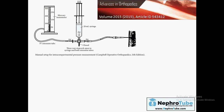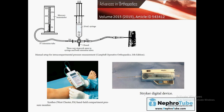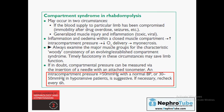To measure pressure inside the muscle, there are multiple apparatus used — inserting a needle into the muscle using different techniques. Compartment syndrome is diagnosed when the pressure inside the muscle compartment is more than 50 mmHg in patients with normal blood pressure, or when intracompartment pressure is 30 to 50 mmHg in hypotensive patients. These findings are highly suggestive of intracompartment syndrome.